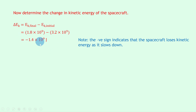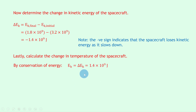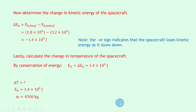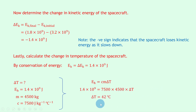Assuming no energy losses, by conservation of energy, E_H = 1.4×10⁹ joules (ignoring the negative sign). We're trying to find ΔT; we know E_H = 1.4×10⁹ J, m = 4500 kg, and c = 7500 J/kg°C. Writing down E_H = cmΔT and substituting: 1.4×10⁹ = 7500 × 4500 × ΔT. Dividing both sides by 7500 × 4500 gives ΔT = 42 degrees Celsius.